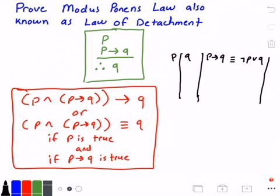And then I'm going to need four rows because I have my two propositions, P and Q.